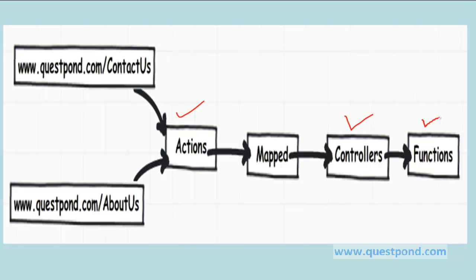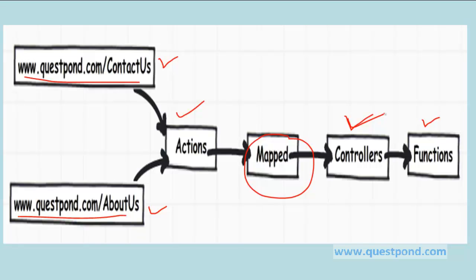The controllers actually go and invoke functions. For example, through the browser you can send an action like www.questbond.com/contact-us, or from the URL you can send an action called about-us, and these actions are then mapped to the controllers by using the MVC mapper. It is very much possible that you can have multiple actions mapped to a single controller — for example, a URL with a contact-us action and an about-us action both mapped to only one controller.